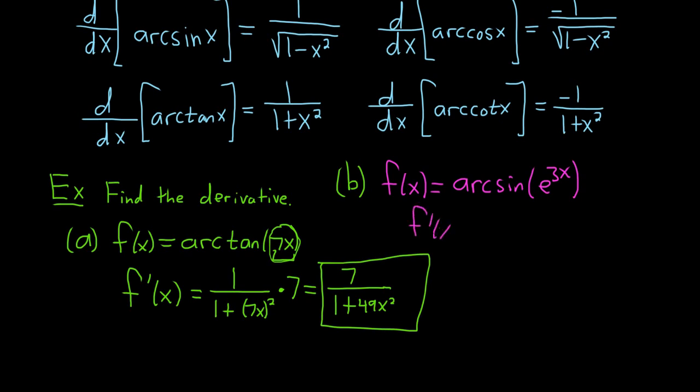f'(x): the derivative of arcsine is 1 over the square root of 1 minus x². This is your x. So it's 1 over the square root of 1 minus (e^(3x))² times the derivative of the inside function. Your inside function here is e^(3x). The derivative of e^x is e^x, so here it's e^(3x) times the derivative of the inside function, which is 3. So it's like a double chain rule.